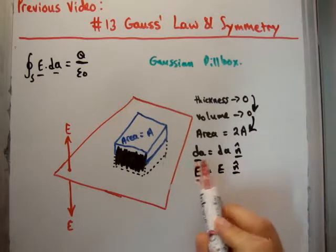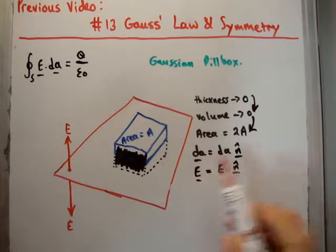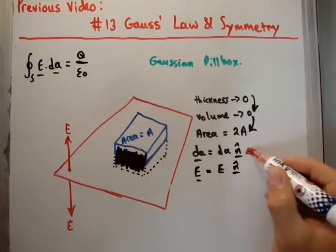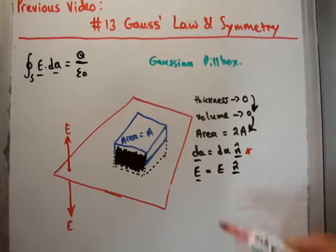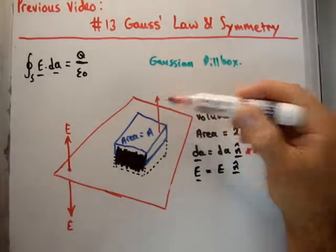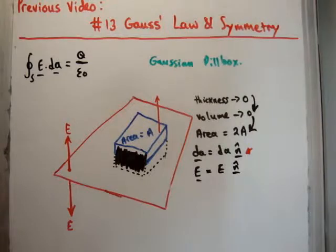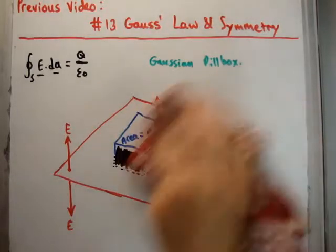Notice if we pick this Gaussian pillbox, dA, the infinitesimal area element, will point normal to the surface. So it'll be n-hat. But notice the electric field is also in the n-hat direction. So that means they point in the same direction. We're going to have the cos of 0 in the dot product, and we can take the electric field outside of the integral.